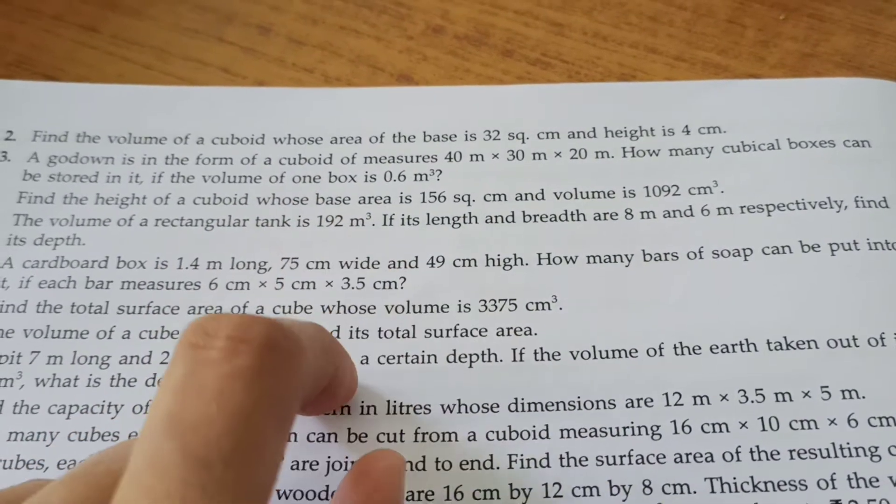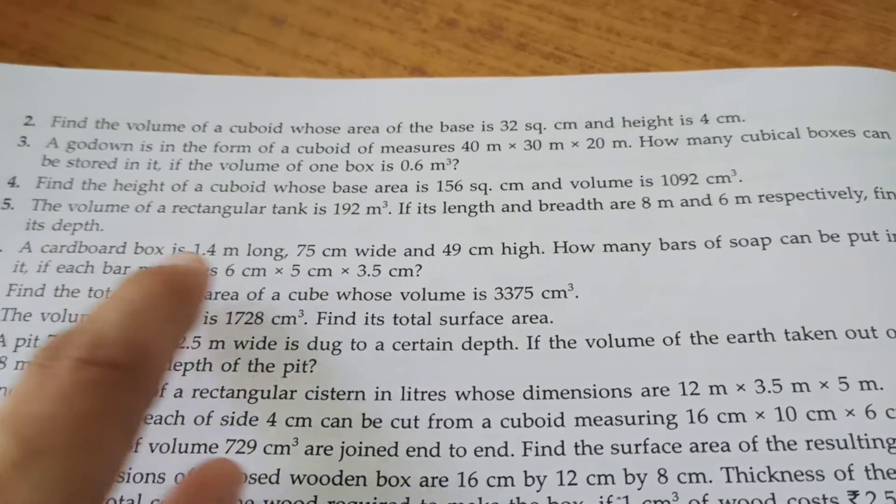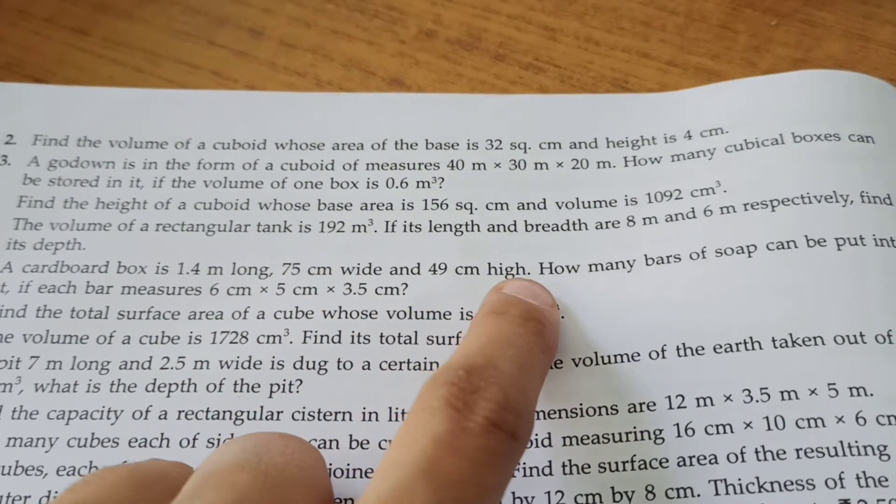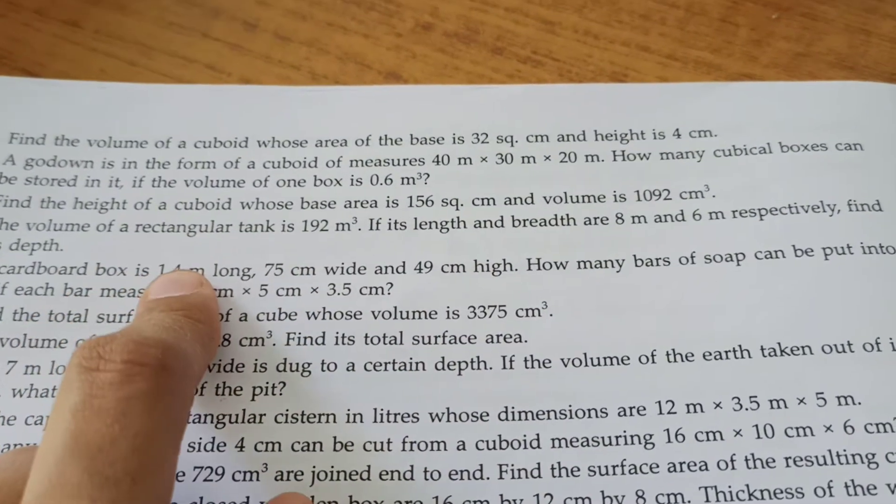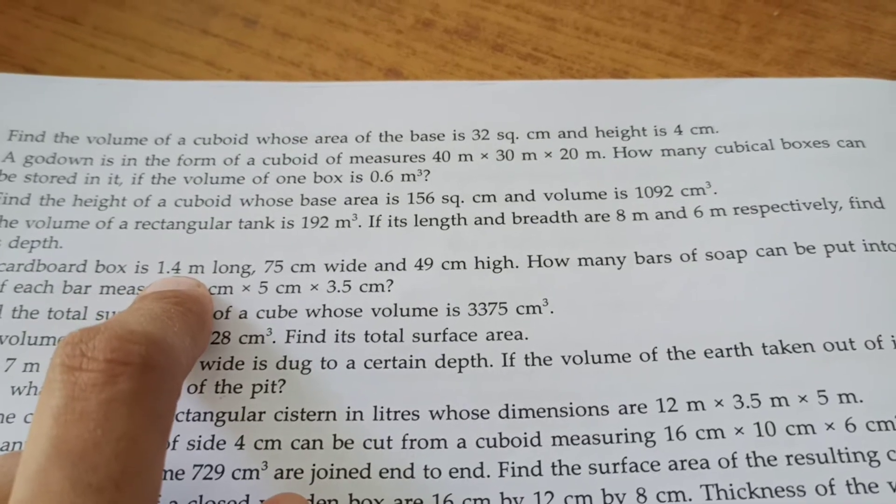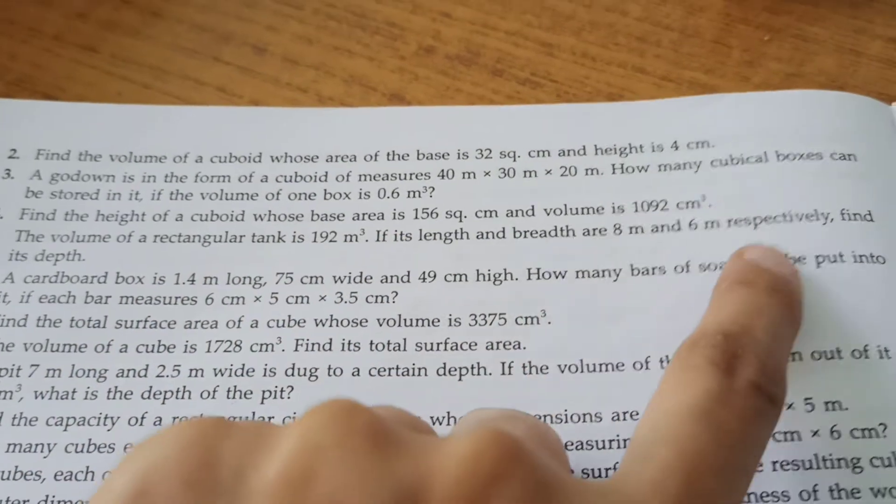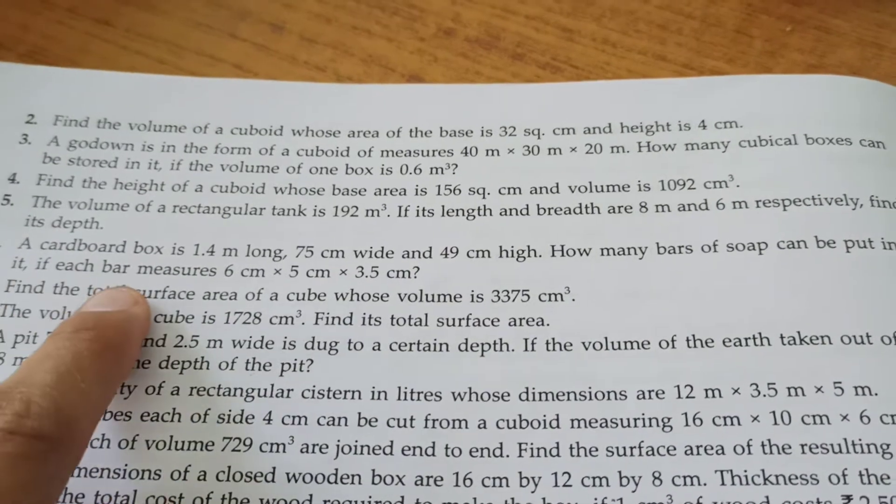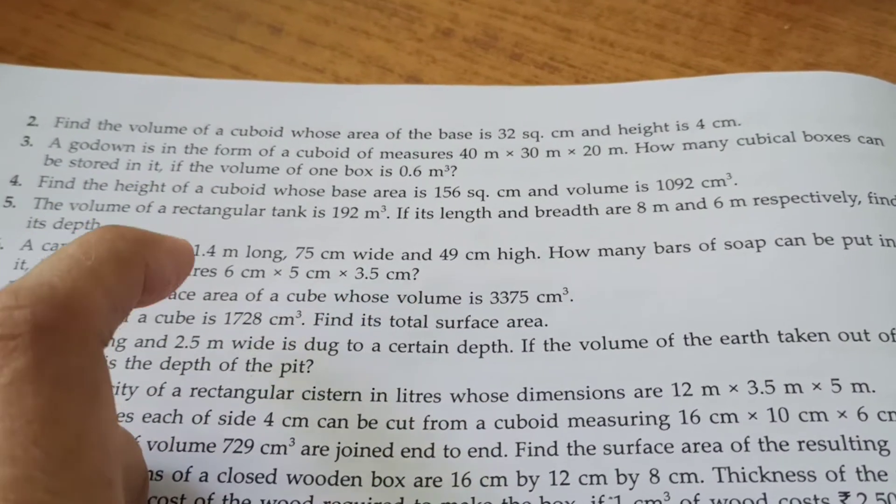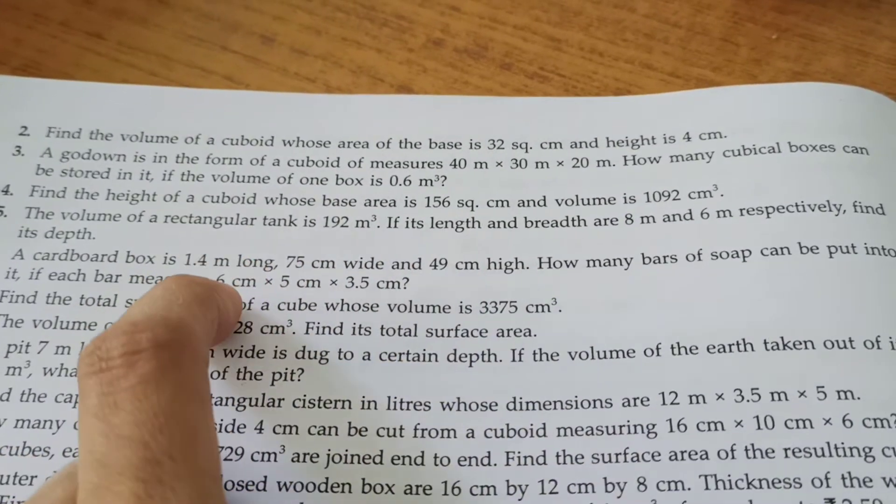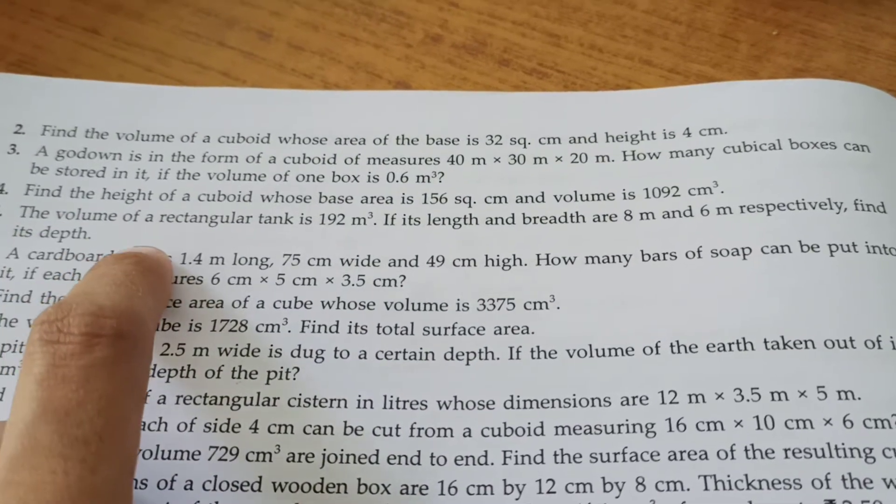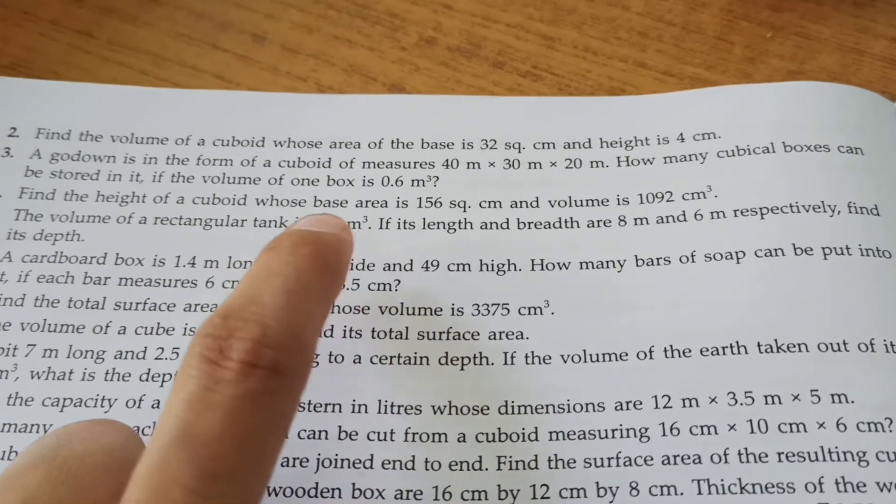A cardboard box is 1.4 meters long, 1.75 centimeter wide, and 49 centimeter high. This is given in meters and centimeters, so convert this into centimeters - 1.4 becomes 140. How many bars of soap can be put into it if each bar measures 6 centimeter, 5 centimeter, and 3.5 centimeter? We multiply these three dimensions and divide by this. Number of boxes equals volume of cardboard box divided by volume of one soap bar.